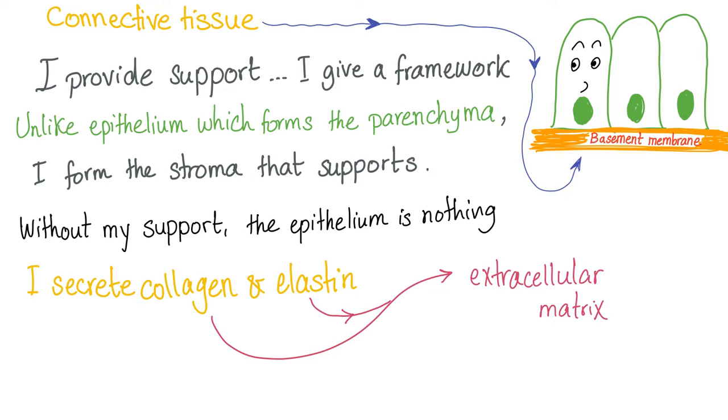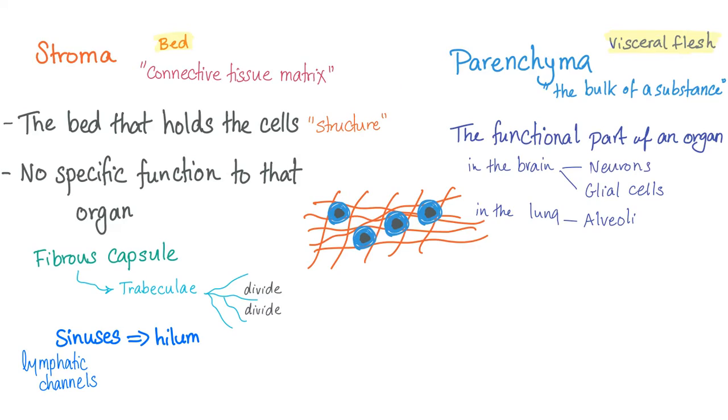I couldn't have said it better than the connective tissue. Stroma and parenchyma. Stroma provides the structure. Parenchyma is the actual cell that carries out the function. Stroma is like the chassis of the car. Parenchyma is the actual engine of the car.